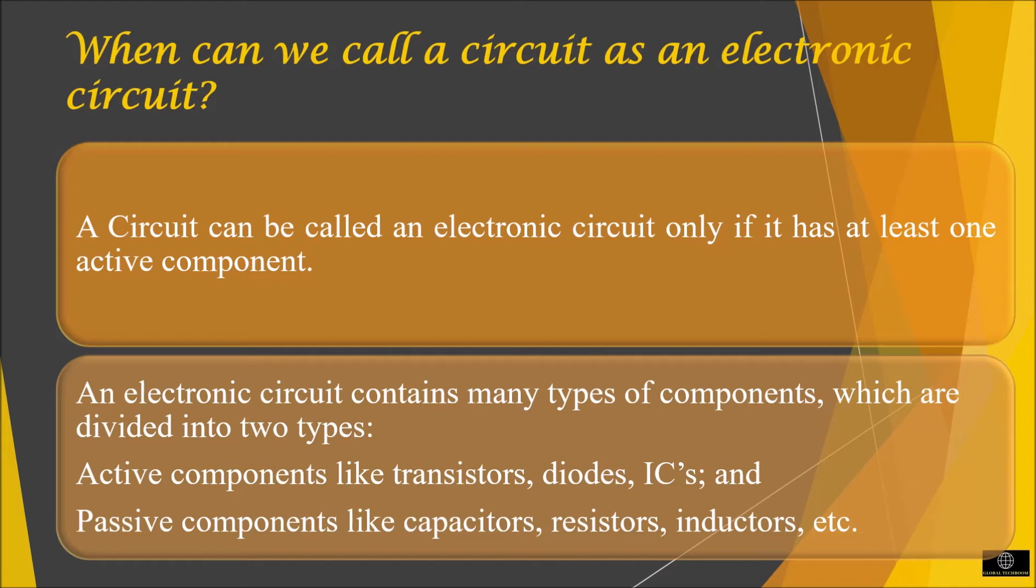An electronic circuit contains many types of components which are divided into two types: Active components like transistor, diode, ICs, etc., and passive components like capacitor, resistor, inductor, etc.